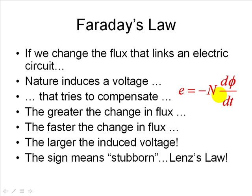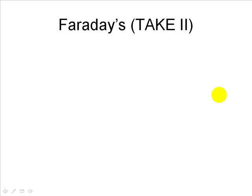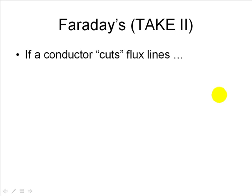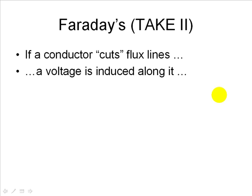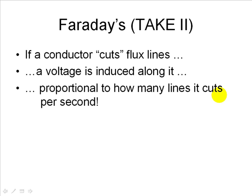However, there is an expression of Faraday's law that I find much more useful when studying rotating machines. Let's call that Faraday's law takes two. If a conductor cuts magnetic flux lines, a voltage appears along that conductor. The conductor may be moving through the magnetic flux and cutting lines, or the conductor is stationary but the magnetic flux is moving across it. In either case, Nature induces a voltage along the conductor proportional to how many lines it cuts per second.